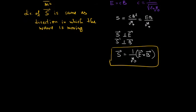If we know the Poynting vector, we can find the total energy flow per unit time — that is, the power. The power equals the closed surface integral of S dot dA.